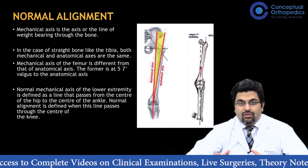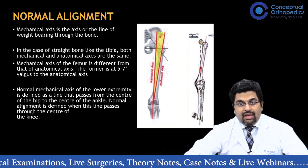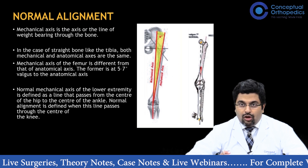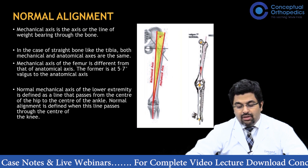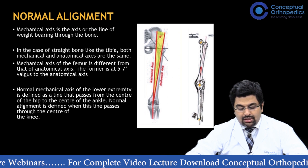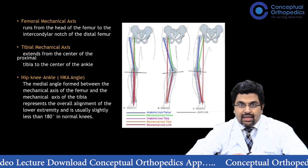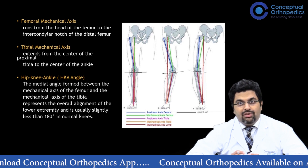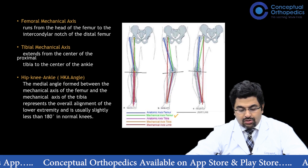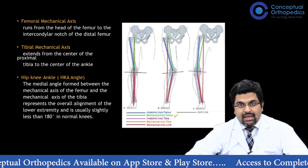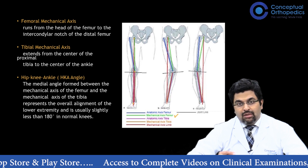The normal mechanical axis of the lower limb — also known as the mechanical axis of the knee — is defined as the line passing from the center of the hip to the center of the ankle. In a patient with normal knee alignment, this line should pass through the center of the knee. The femoral mechanical axis runs from the head of the femur to the intercondylar notch of the distal femur, while the tibial mechanical axis extends from the center of the proximal tibia to the center of the ankle, which is the same as its anatomical axis.